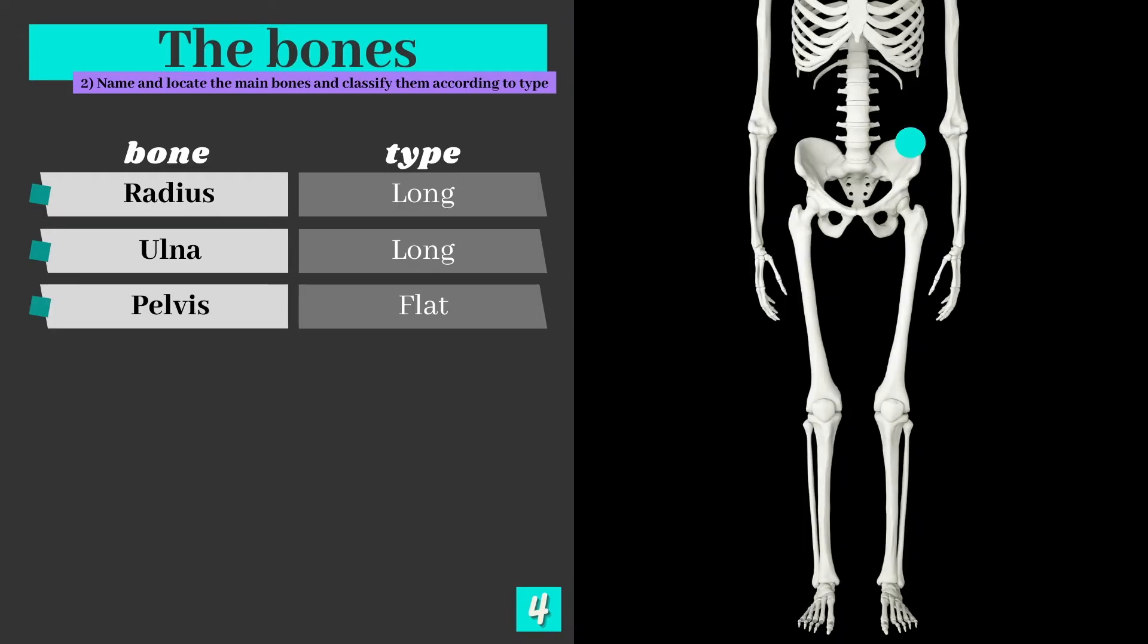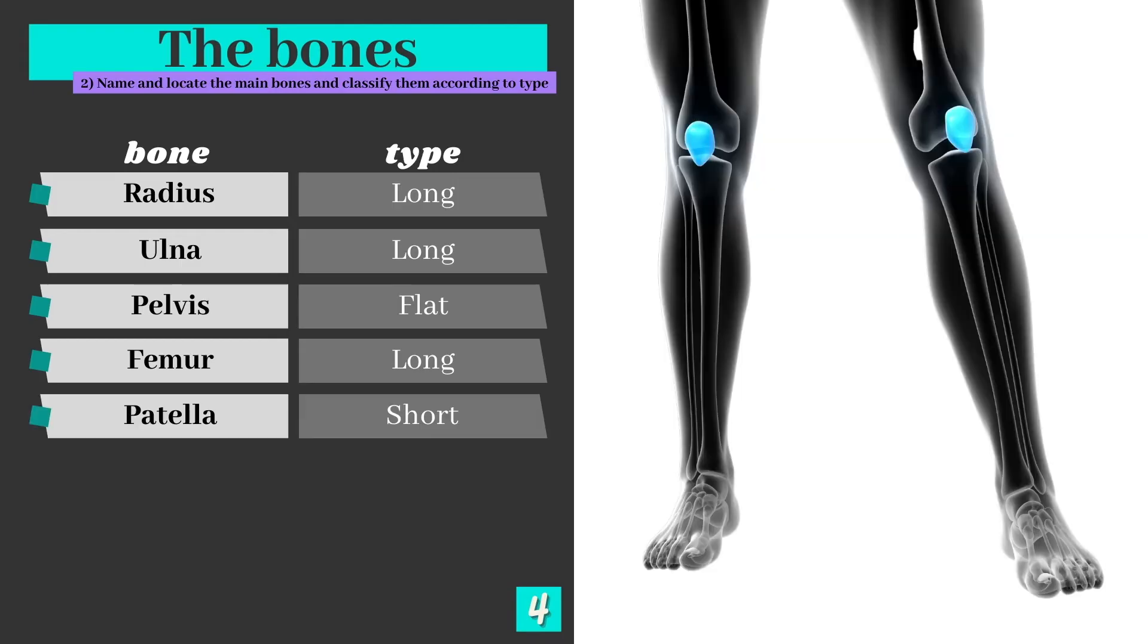The pelvis is a large flat bone which again provides the surface area needed for muscle attachments. The femur is the biggest bone in the human body and is also a long bone. It has a role in producing red blood cells, but primarily is there for movement. The patella is the kneecap, which is both there to protect the knee joint, but also to provide some stability when moving.